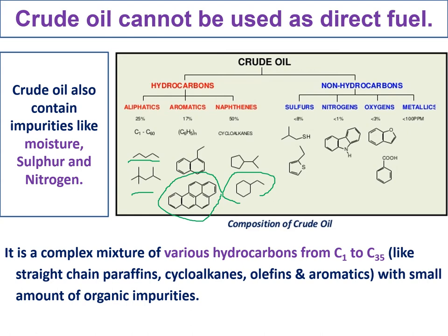As the carbon chain length increases, the boiling point also increases. C35 hydrocarbons may have a boiling point of around 450 degrees centigrade. To start combustion of this complex mixture, we need to provide a very high ignition temperature. A good fuel should have a moderate ignition temperature. When you burn crude oil, you need to pay more heat energy to start combustion than the heat energy it produces. That is why crude oil is not suitable as a direct fuel.